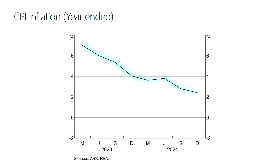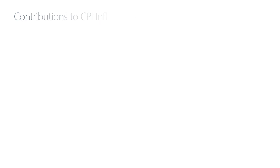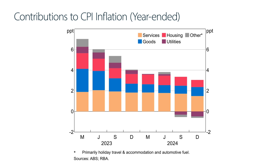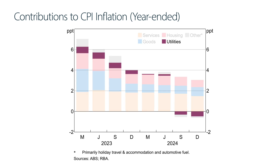Focus on the black line. Headline inflation has continued to ease over 2024, to be within the 2–3% target range late last year. Some of this decline has been due to temporary government subsidies to households, including electricity rebates. You can see this in the purple bars. In late 2024, utilities prices were falling, while most other prices were rising.